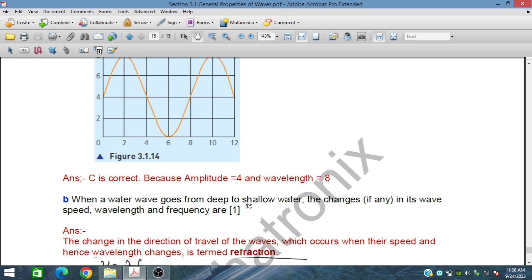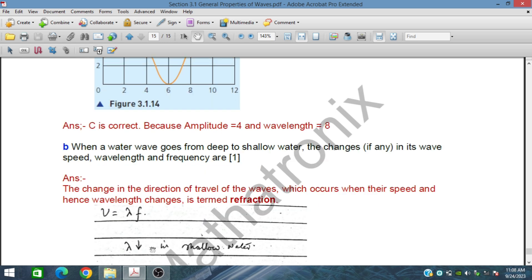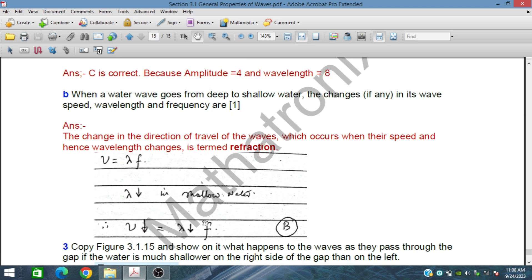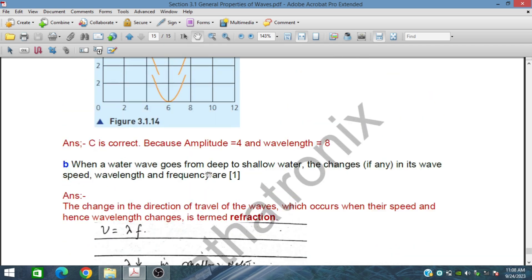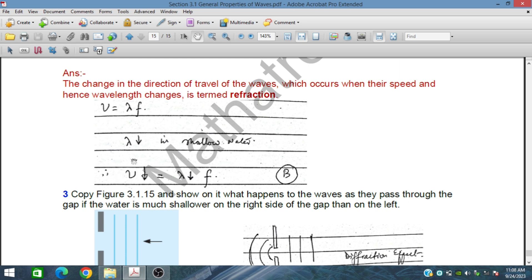Second part. When a water wave goes from deep to shallow water, the changes if any in its wave speed, wavelength, and frequency. The change in the direction of travel of the waves occurs when their speed and wavelength changes. If wavelength changes, speed changes. If wavelength decreases in shallow water, then speed will decrease. The answer is B, speed will decrease.